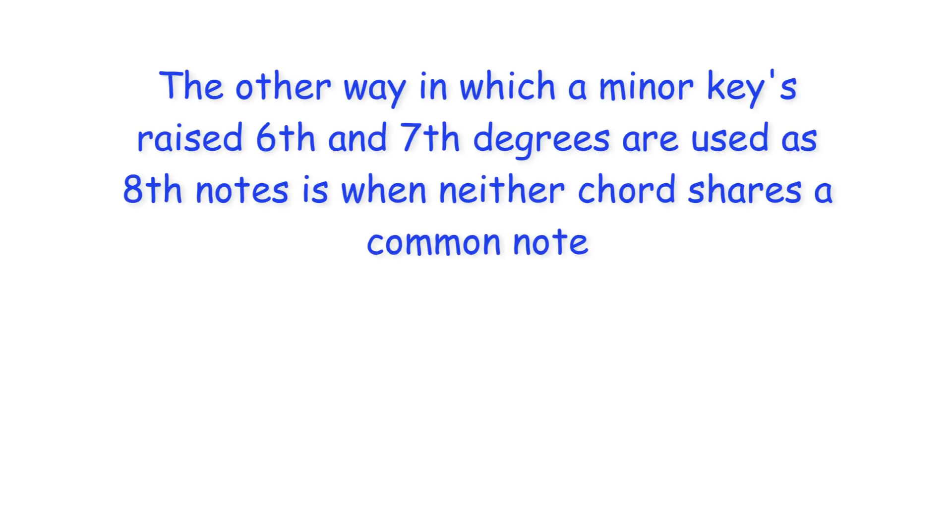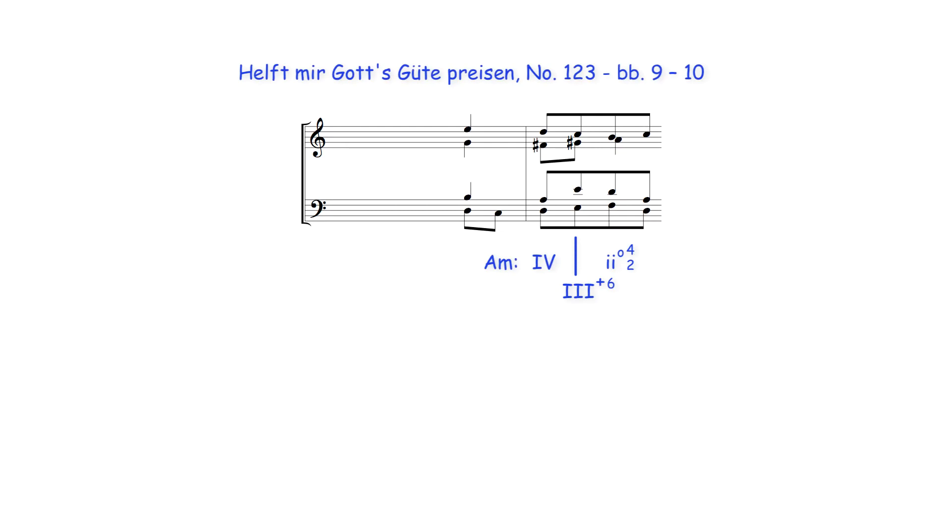The other way in which a minor key's raised sixth and seventh degrees are used as eighth notes is when neither chord shares a common note. Here for example all notes of both chords move as eighth notes. In this example, the augmented median chord moves from the major subdominant to the supertonic seventh in four-two inversion.